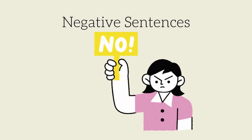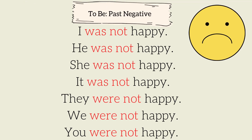Let's learn negative sentences using the be verb. Listen and repeat. I was not happy. He was not happy. She was not happy. It was not happy. They were not happy. We were not happy. You were not happy.